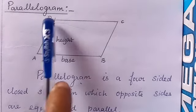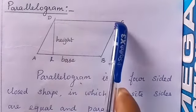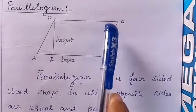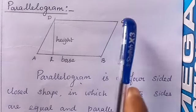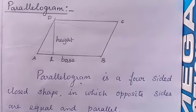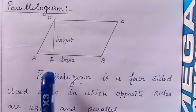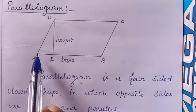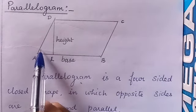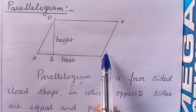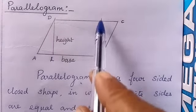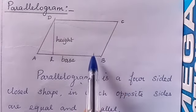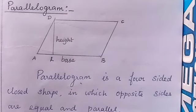In a parallelogram, AB equals CD and AB is parallel to CD, and AD is parallel to BC. The difference between a parallelogram and a rectangle: in a parallelogram, the angle B is an obtuse angle, but in a rectangle the adjacent sides make exactly 90 degrees.